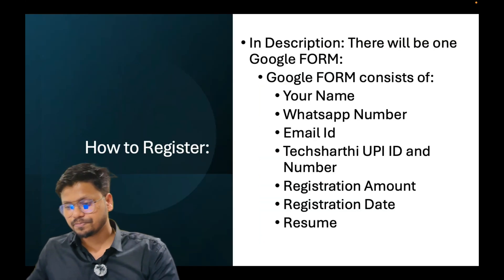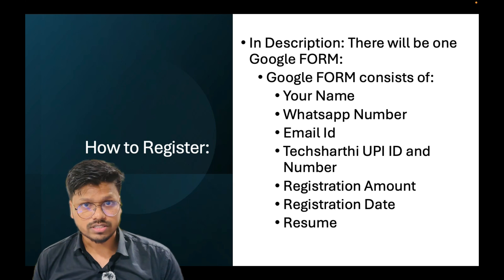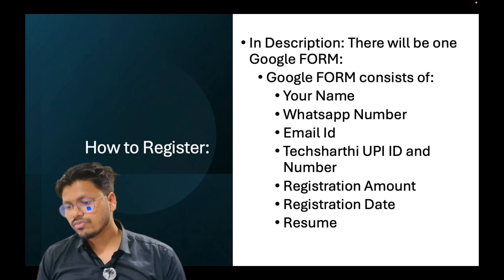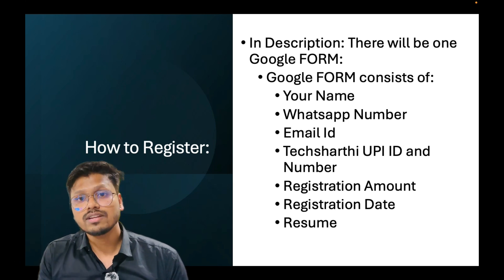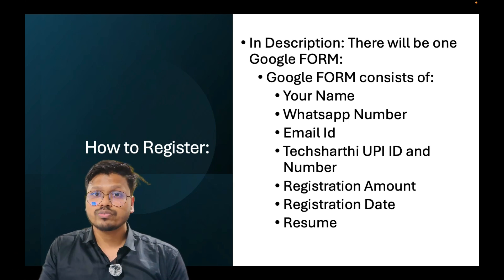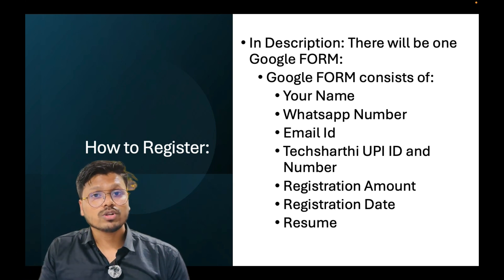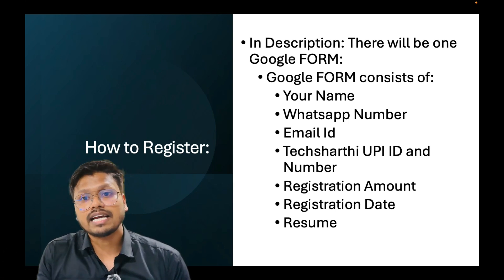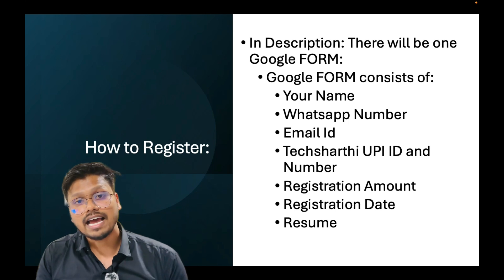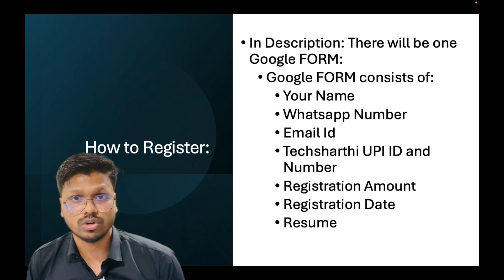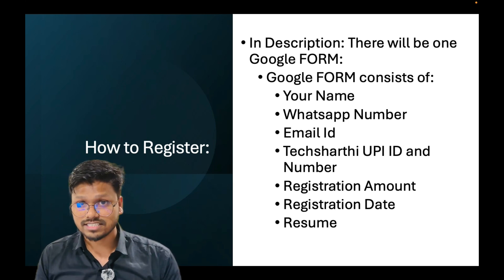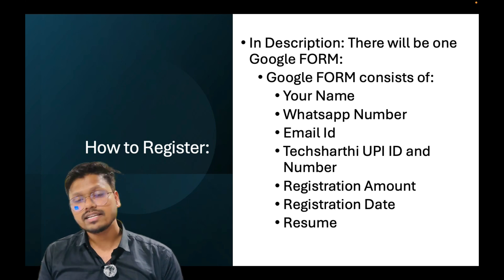Now, coming to the most important point: how to register. In the description box of this video — I think this is Batch 5 — you will find a Google Form. The Google Form consists of a few columns you need to fill: your name, WhatsApp number (for the group), email ID (through which I'll send the group link), TechSarthi Academy UPI ID, the registration amount, the transaction date, and your resume so we can have a look at it.